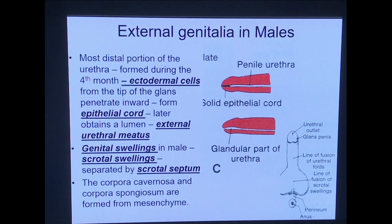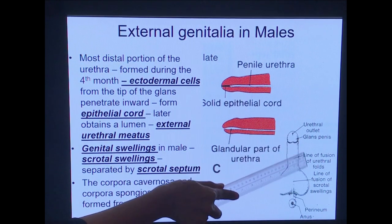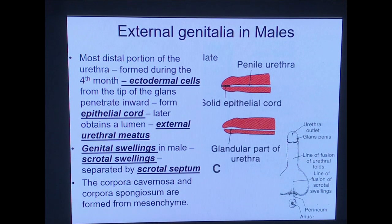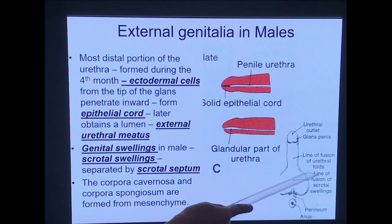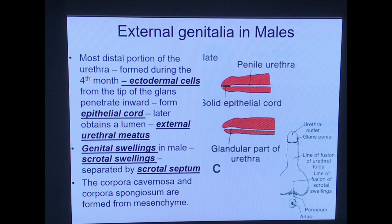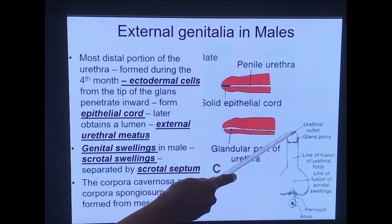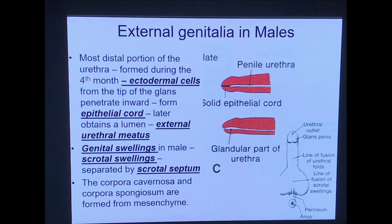The urethral folds have fused, and the normal anatomical position of the penis is the erect position, where the inferior aspect is ventral and the dorsal aspect is superior. You can see here the fusion of the urethral folds covering the penile urethra, the formation of the scrotal swelling fused externally but separated by the scrotal septum, and the anal fold around the anal orifice. The most distal part of the phallus forms the glans penis, and the external urethral meatus is contributed by ectodermal cells.